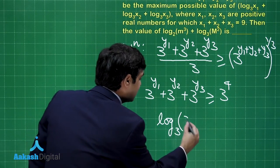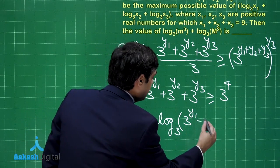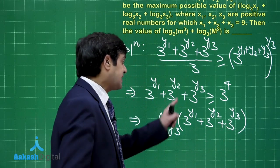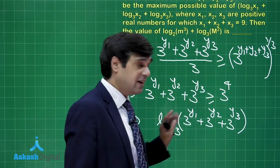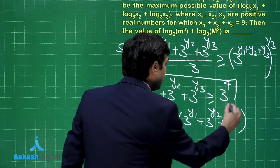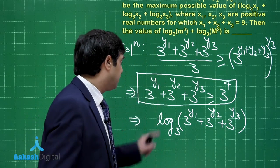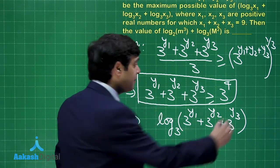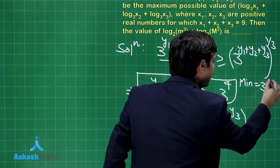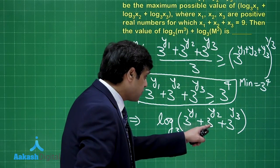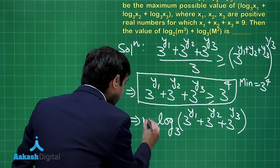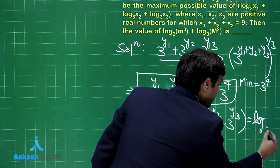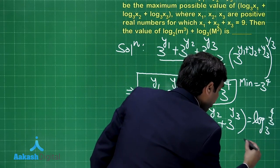So log base 3 of (3^y1 + 3^y2 + 3^y3) is greater than or equal to 4, taking log on both sides. We can say directly that the minimum value of (3^y1 + 3^y2 + 3^y3) is 3^4. The minimum is 3^4, so the minimum value of this term, which is small m, equals log base 3 of 3^4, or simply 4. This is small m.